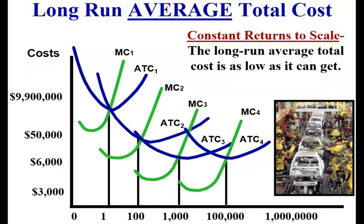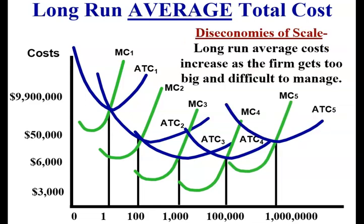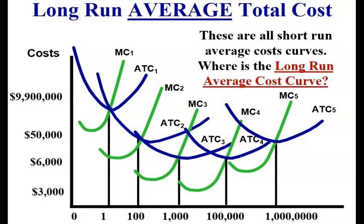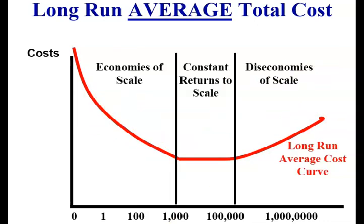With constant returns to scale, the long run average total cost is as low as it can get. And if you have diseconomies of scale, the long run average cost increases as the firm gets too big and difficult to manage. This graph shows a bunch of short run average cost curves, and the long run average cost curve is essentially the sum of all of them. You have economies of scale when the long run average cost curve is decreasing, constant returns to scale in the middle, and finally diseconomies of scale where the curve rises.